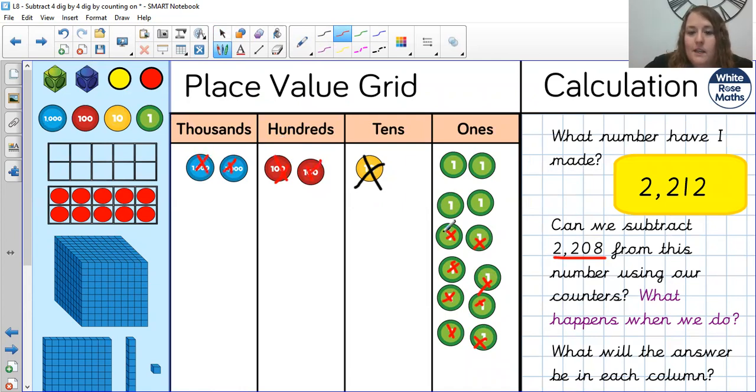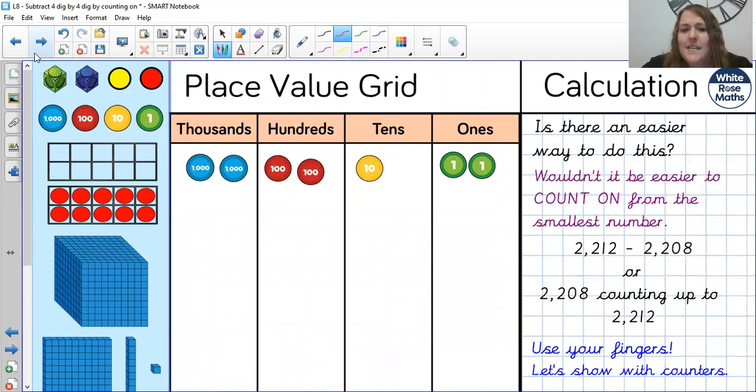There are zero tens to subtract, two of the hundreds and two of the thousands. So what I am left with is four ones, because there's nothing in this column, nothing in this column and nothing in this column. Is there an easier way to do that though?